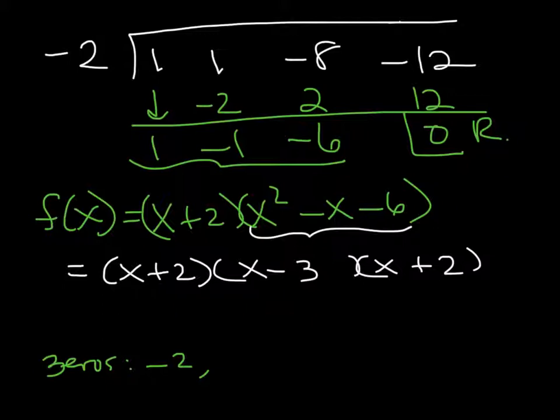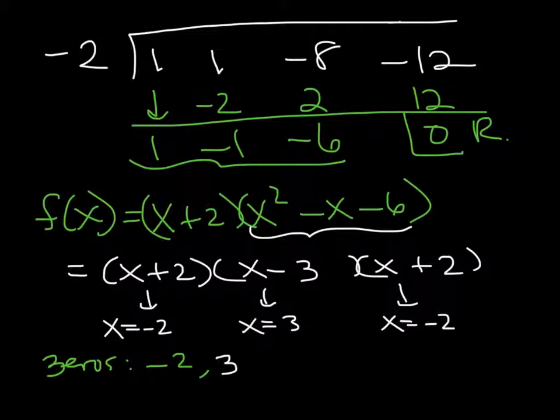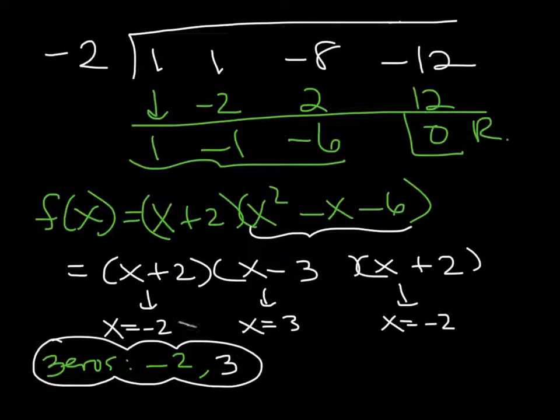So from here, this one gives me an x equals negative 2 as a root. This one gives me an x equals 3 as a root. And this one gives me x equals negative 2 as a root. So I did get 3, but I only actually have two unique ones. So here's my 0s. This one here, what happens here and here, this is what we call a multiplicity of 2.